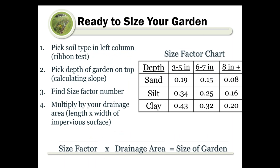Now you're ready to size your garden. You need the depth you calculated from your slope and your soil type from your soil test. Combine those two to get your size factor using a chart: pick your soil type in the left column and your garden depth across the top, find the size factor number, then multiply that size factor by your drainage area - the area of impervious surface draining to the garden. Length times width gives you square feet, and that calculation gives you the size of your garden.